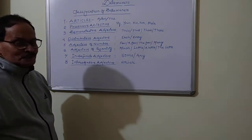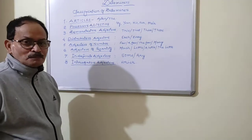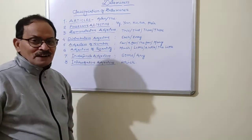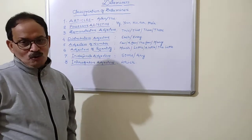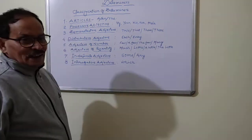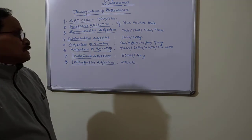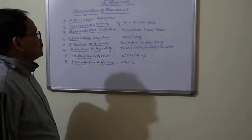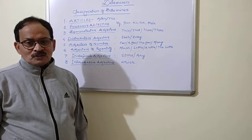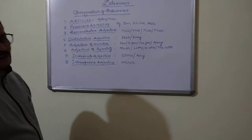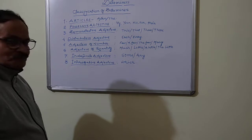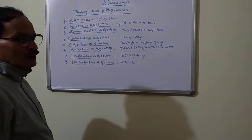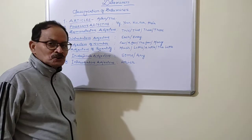Today I am going to teach you the very important chapter named as Determiners. Determiner, by its own name, it is very clear that its function is to determine something or someone. It specifies something and sometimes it generalizes something or someone. So the function of Determiner is to either generalize or specify a noun which comes after it. It can be said that a Determiner is a word which is placed before a noun either to specify it or to generalize it.